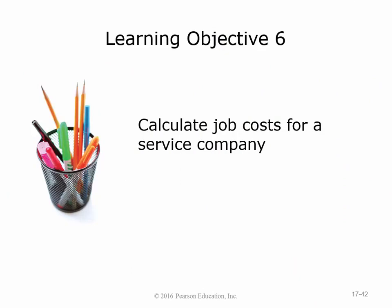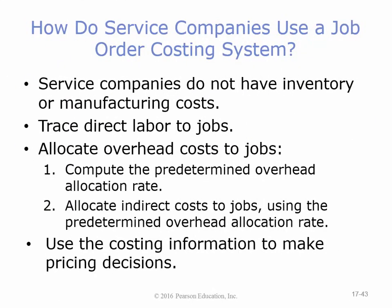The last objective is calculating job costs for a service company. Service companies don't have inventory or manufacturing costs, so it's much easier. If we have direct labor, we put it right to the jobs and then allocate overhead the same way. Think of a dentist — they don't manufacture anything, they provide a service. They have direct labor costs like the hygienist's and dentist's salaries, plus other costs directly related to providing their service.